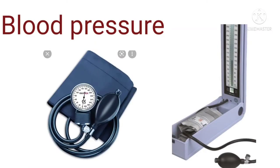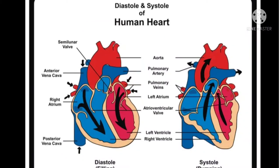Next, blood pressure — BP. In 9th class we studied blood and its components, blood grouping, etc., in the chapter on animal tissues. Now we will discuss some other points related to blood. To move blood through the network of vessels, a great deal of force is required. This force is provided by the heart and is at its highest when the ventricles contract, forcing blood out of the heart and into the arteries. Then there is a drop in pressure as the ventricles refill with blood.